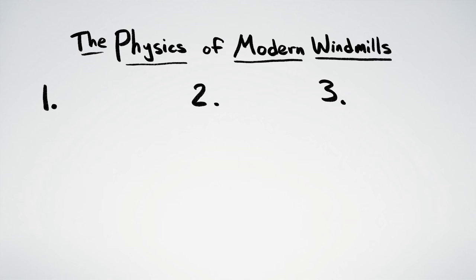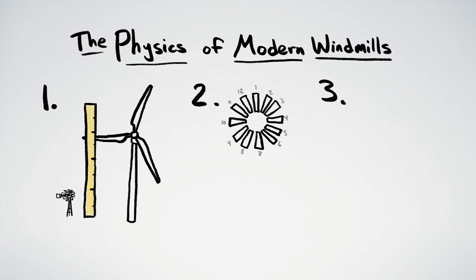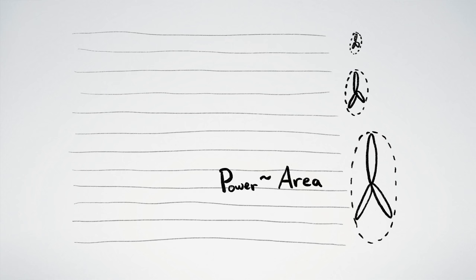I see three main features to explain. The size, the number of blades, and the shape of the blades. Size is easiest. The bigger the area, the more wind you can use, and therefore the more wind energy you can capture.